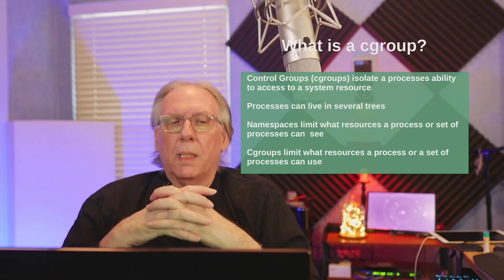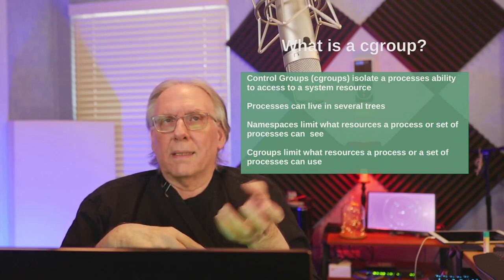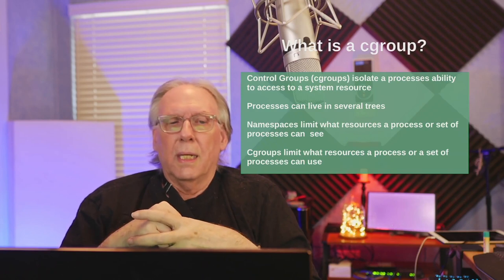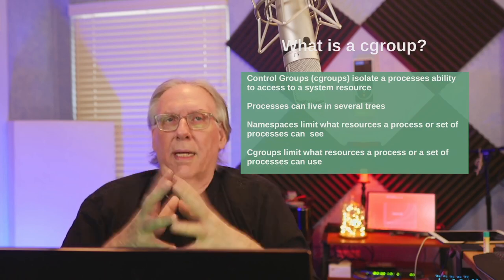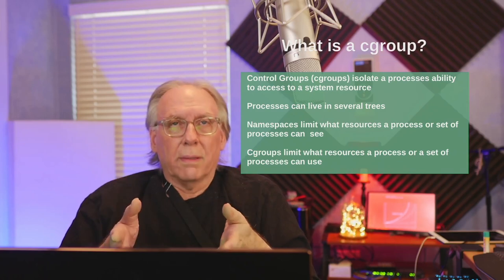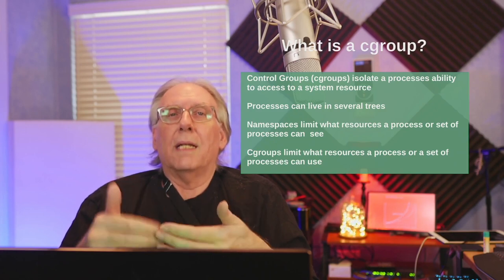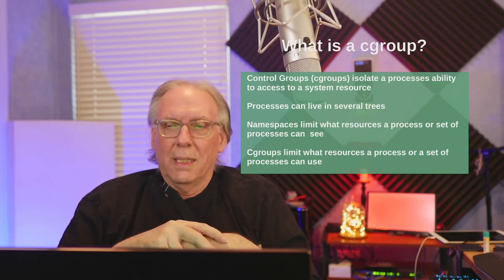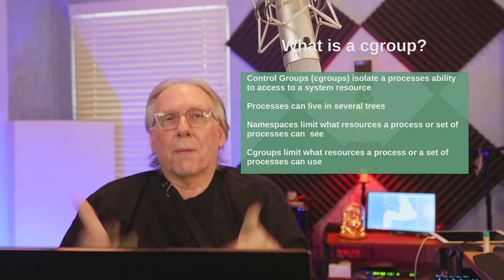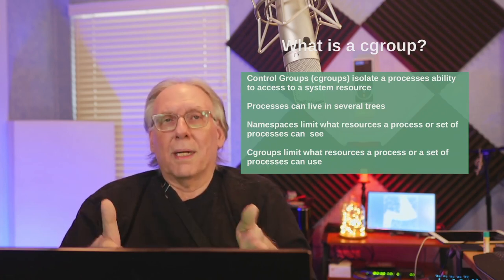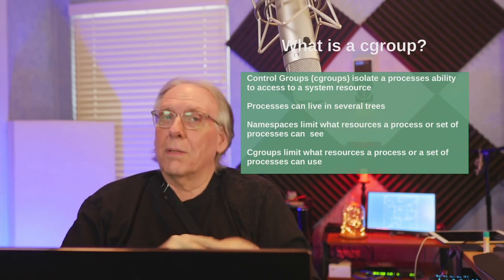Cgroups — we already talked about it being a control group, but what does it do? Cgroups isolate a process's ability to access a system resource. You can think of namespaces as limiting the processes to a set of resources, but it doesn't mean they can use them. Cgroups actually define what processes can use which resources. So namespaces say 'here are the resources you can see,' and a cgroup says 'here are the resources your process can actually use.' That's the control — the definition is in the namespace, the control is in the cgroup. That's why it's called the control group.